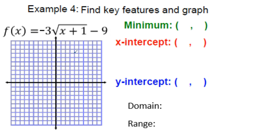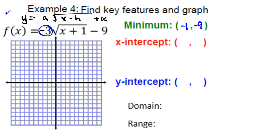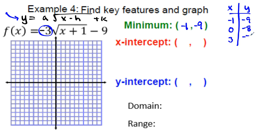Example 4 finally has a negative value in front. Writing the general form: the vertex is (−1, −9) — remember x always lies, and the a value is negative so the graph opens downward. Build the table: start with (−1, −9), then up one gives x = 0, up three gives x = 3. Plug in x = 0: √(0 + 1) = 1, times the coefficient times −3, minus 9 gives −12. Going up by three gives −15.